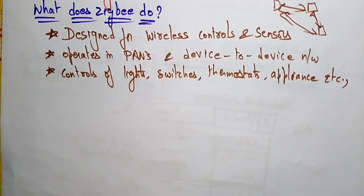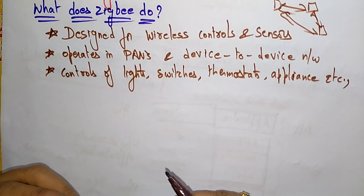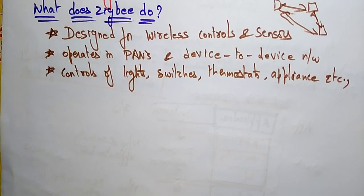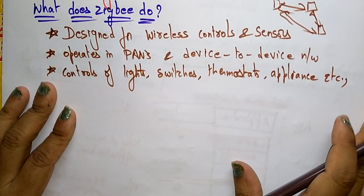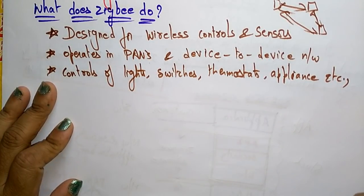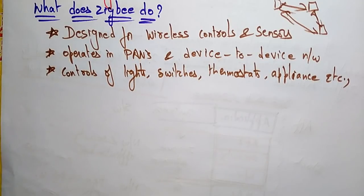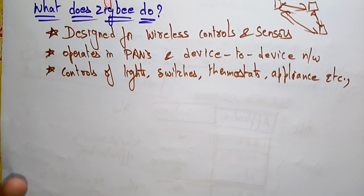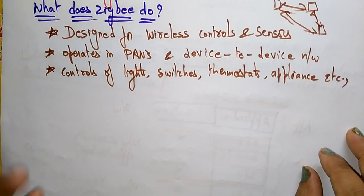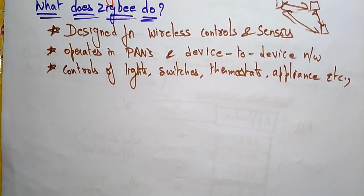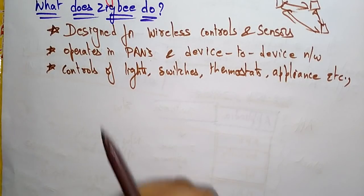So what exactly does ZigBee do? Suppose if you are in your home, there are many electronic gadgets and equipment — you call them devices. Suppose you are sitting in a hall, and in the hall you have many switches: one operates the fan, one makes the tube light glow, one turns on the AC. So every device can be controlled with only one signal — that is ZigBee.